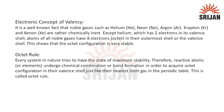The electronic concept of valency is based on the well-known fact that noble gases such as helium, neon, argon, krypton, and xenon are chemically inert — meaning they are very less reactive. Except for helium, which has 2 electrons in its valence shell, all noble gases have 8 electrons in their outermost or valence shell. This shows that the octet configuration is very stable, which leads to the octet rule: every system in nature tries to attain a state of maximum stability.